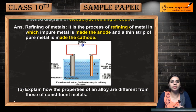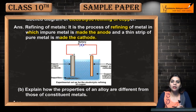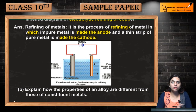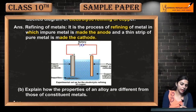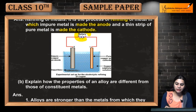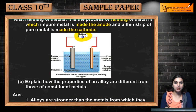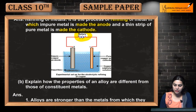Refining means that you extract pure metal from the impure metal. In the experiment, the anode is your impure metal and the strip on the cathode is pure metal. You then apply a battery, and when the circuit is complete, current passes through the solution.